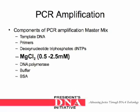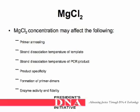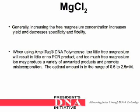The next component of the PCR amplification master mix is magnesium chloride, with a concentration between 0.5 to 2.5 millimolars. Magnesium chloride concentration may affect the following: primer annealing, strand disassociation temperature of template, strand disassociation temperature of PCR product, product specificity, formation of primer dimers, enzyme activity, and fidelity. Generally, increasing the free magnesium concentration increases yield and decreases specificity and fidelity. When using AmpliTaq DNA polymerase, too little free magnesium will result in little or no PCR product, and too much free magnesium ion may produce unwanted products and promote misincorporation. The optimal amount is in the range of 0.5 to 2.5 millimolars.